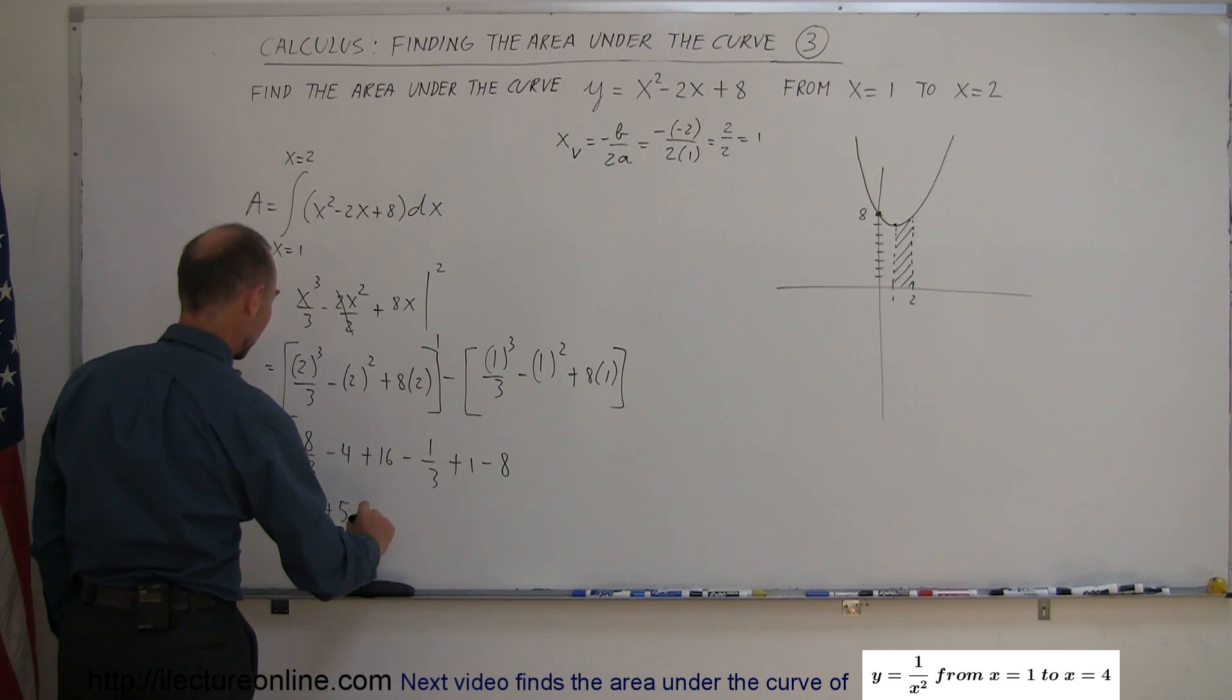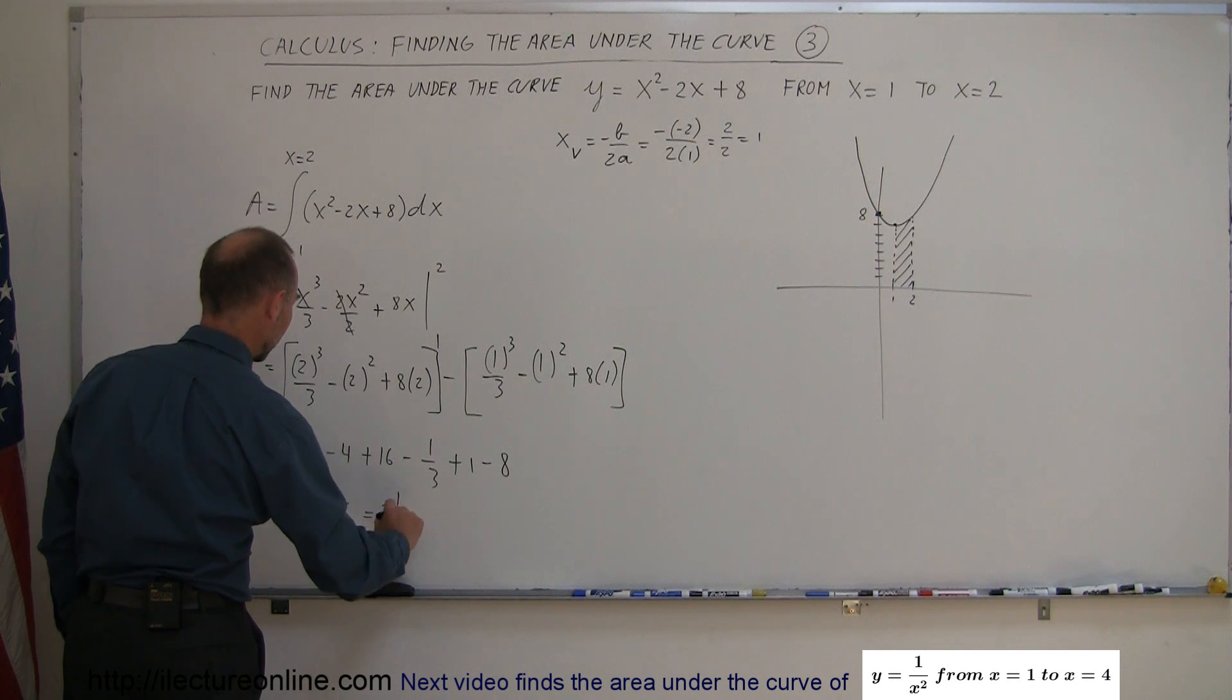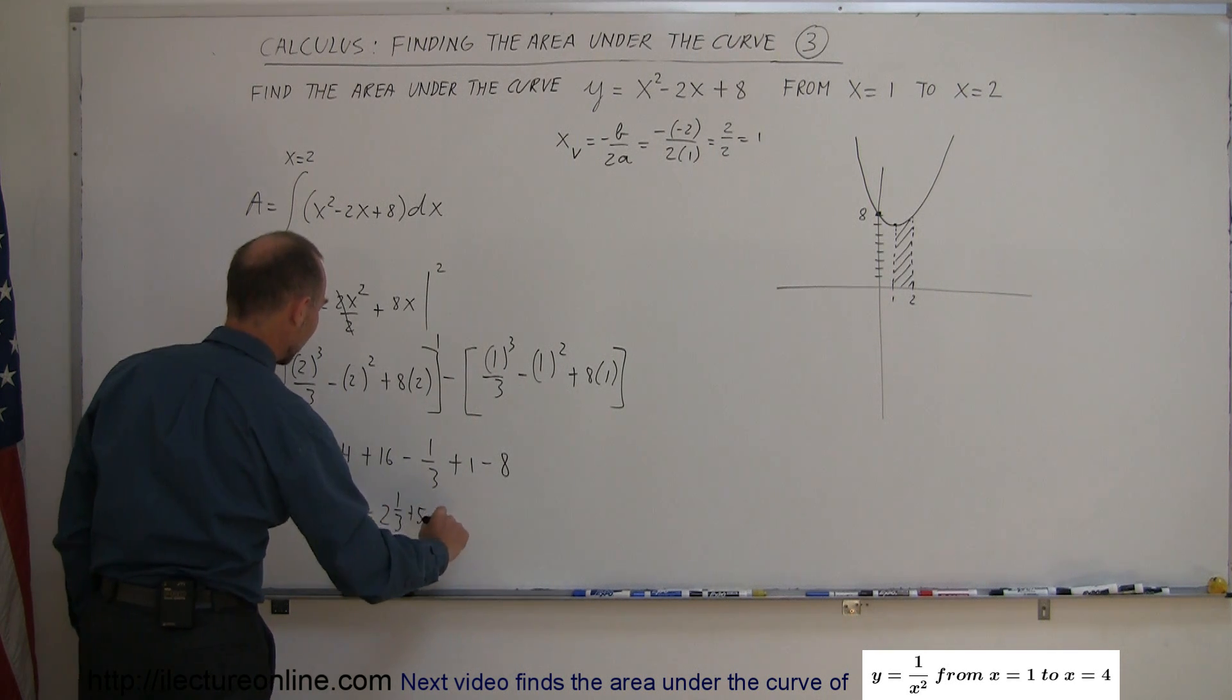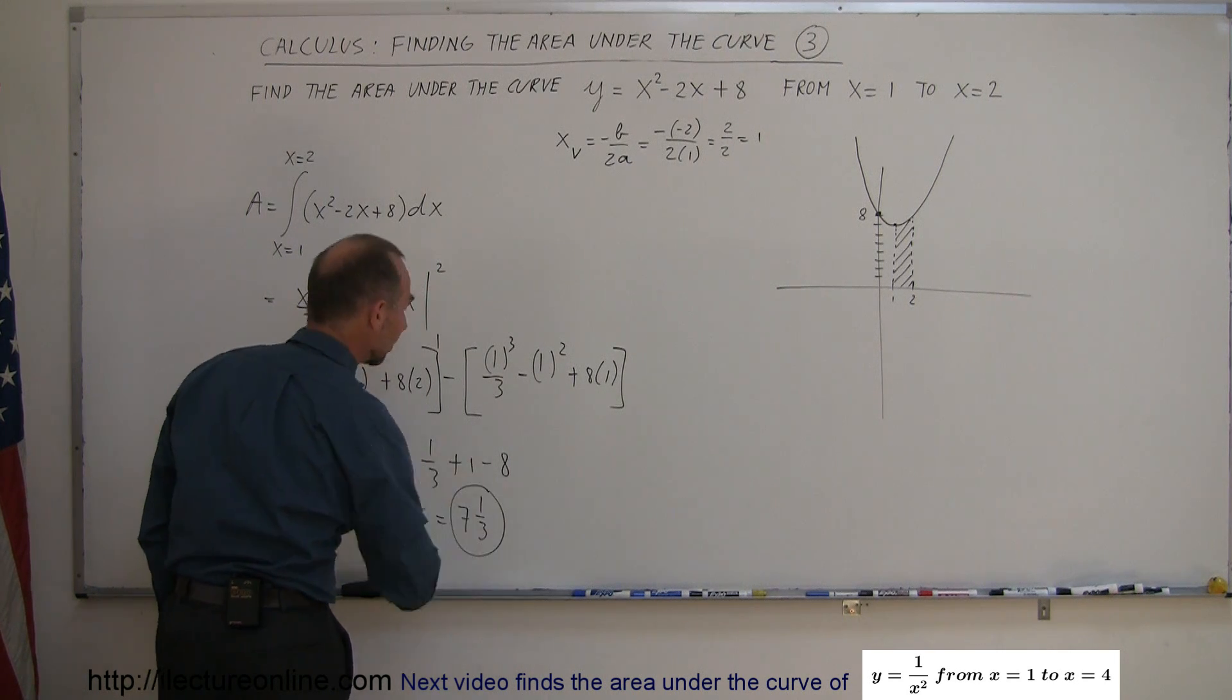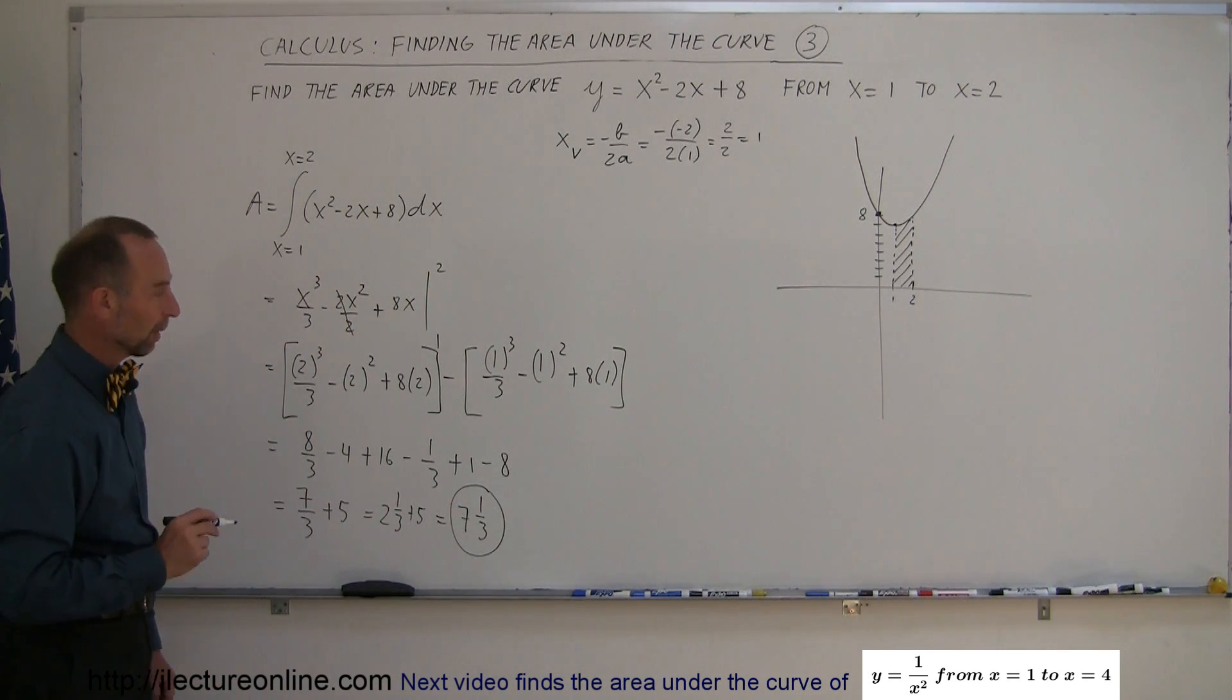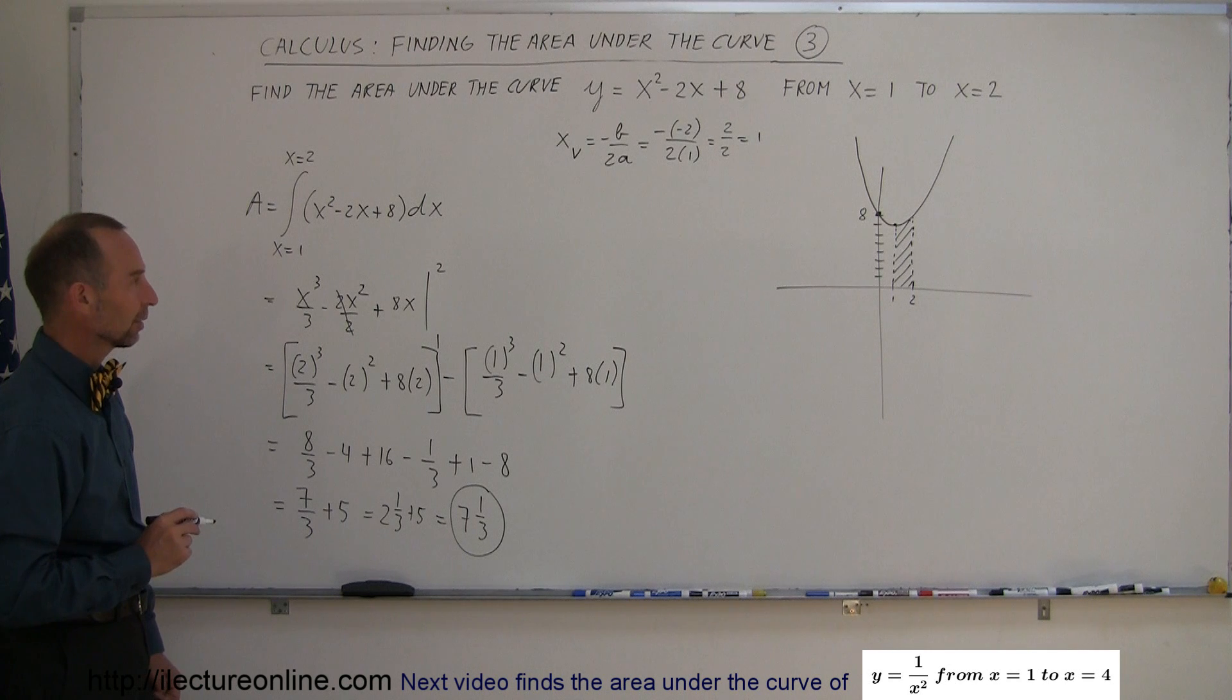And 7 thirds is the same as 2 and 1 third. So it's equal to 2 and 1 third plus 5. Finally we can say that's equal to 7 and 1 third. And there's the area underneath that curve from x equals 1 to x equals 2.